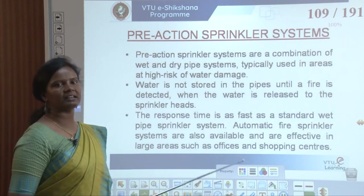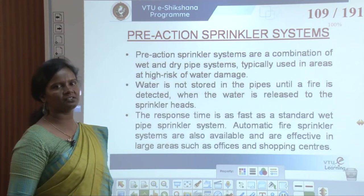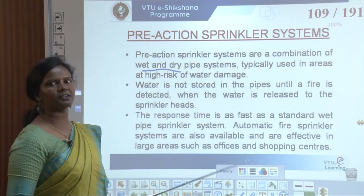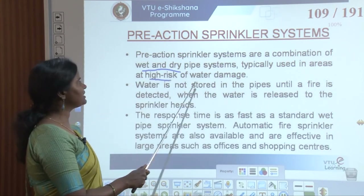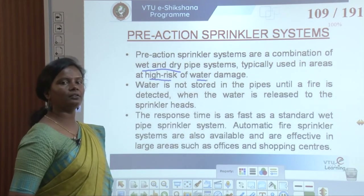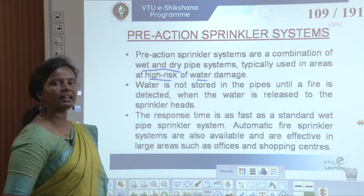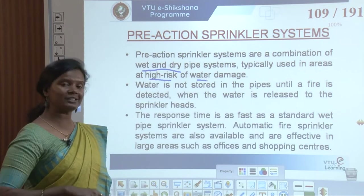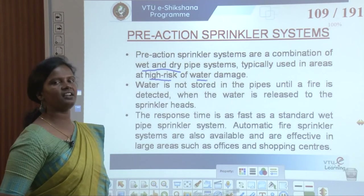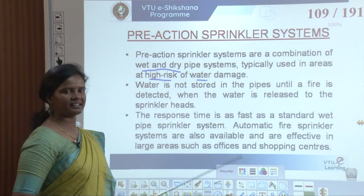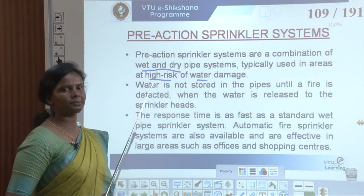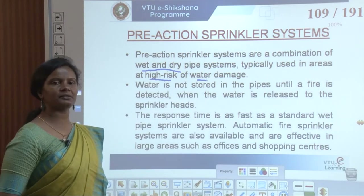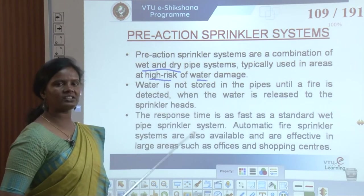There are two more types: pre-action sprinkler systems and deluge sprinkler systems. Pre-action sprinkler systems are a combination of wet and dry pipe systems, typically used in areas at high risk of water damage. Water is not stored in the pipes until a fire is detected, at which point water is released to the sprinkler heads. The response time is as fast as a standard wet pipe sprinkler system — quicker than dry pipe because it immediately releases water.